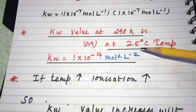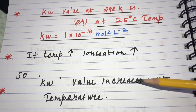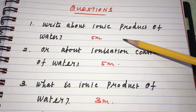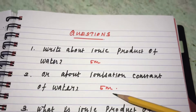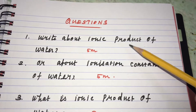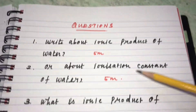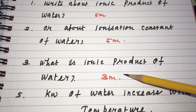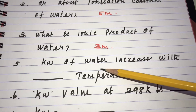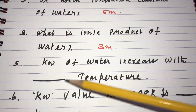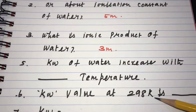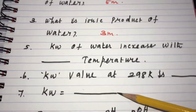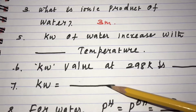For exam purposes, this topic may be asked as: 'Write about ionic product of water' or 'Write about ionization constant of water.' For a 5-mark question, explain from the ionization reaction. For a 3-mark question, define what is ionic product of water. Key fill-in: the Kw value of water increases with increase of temperature. Kw at 298 K is 1 × 10⁻¹⁴ mol² L⁻², and Kw = [H⁺][OH⁻].